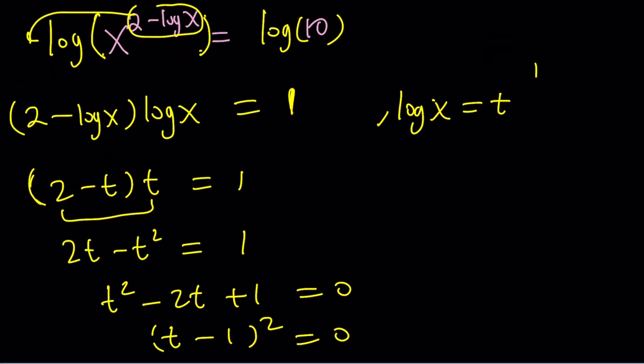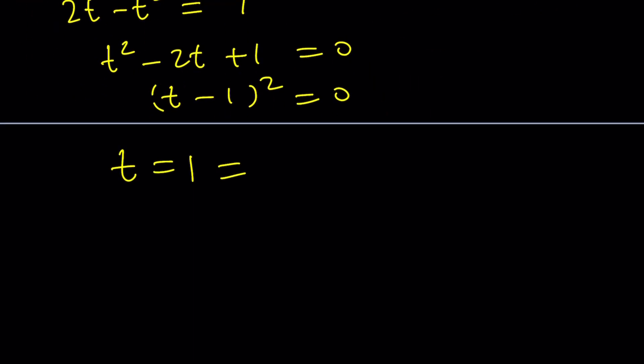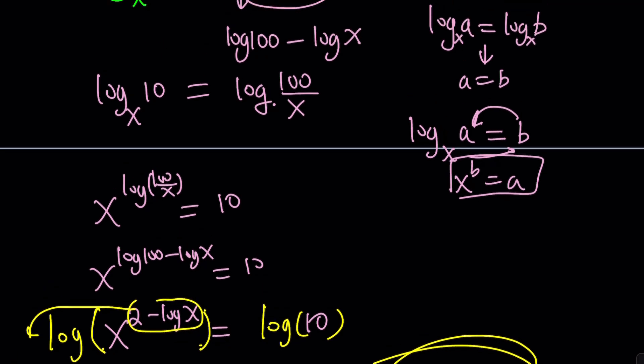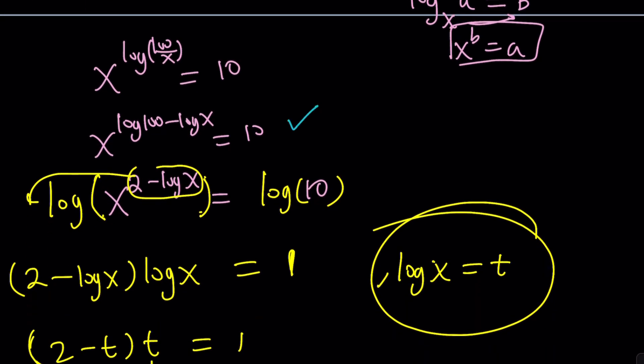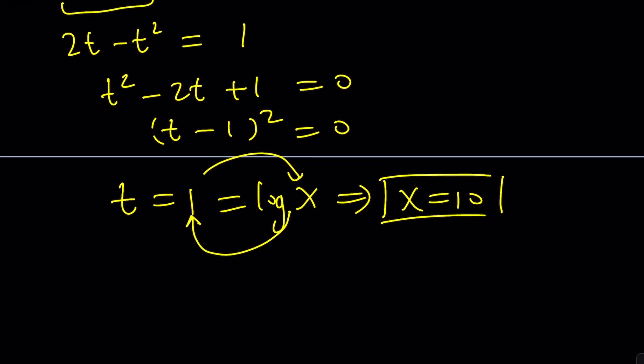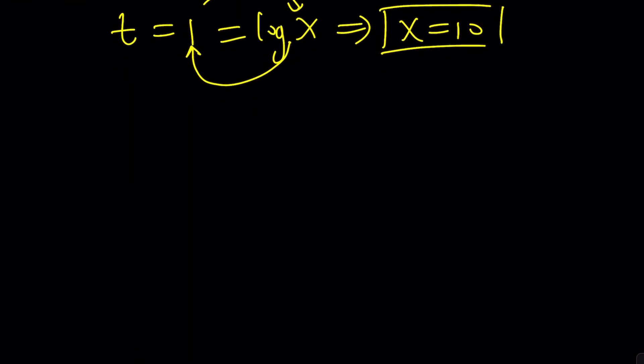From here, we get t equals 1. Let's back substitute. t is log x, so we can set it equal to log x. By definition of logs, this means 10 to the power 1 equals x, or x equals 10. So x equals 10 seems to be the only solution. This was my first attempt. To be honest with you, I didn't even know that this was going to work until I got to this point. Then I realized I can log both sides and get something nice from here. That was a little surprising for me too. That's why I called it an attempt, but it's a method now.